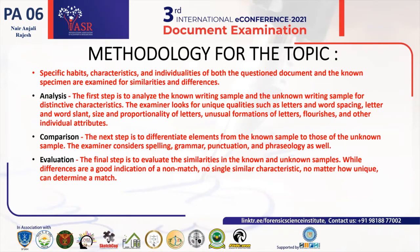The methodology for the topic: specific habits, characteristics, and individualities of both the questioned document and known specimen are examined for similarities and differences. The first step is analysis — analyzing the known and unknown writing samples for distinctive characteristics. The examiner looks for unique qualities such as letter and word spacing, letter and word slant, size and proportionality of letters, unusual formations of letters, flourishes, and other individual attributes. The next step is comparison — differentiating elements from the unknown sample against those of the known sample.